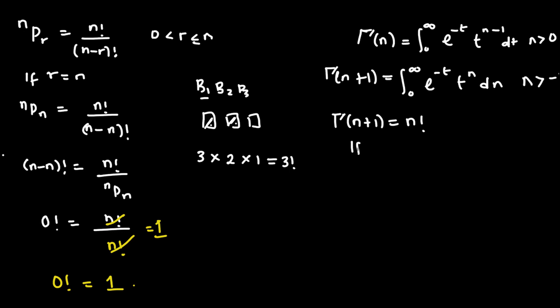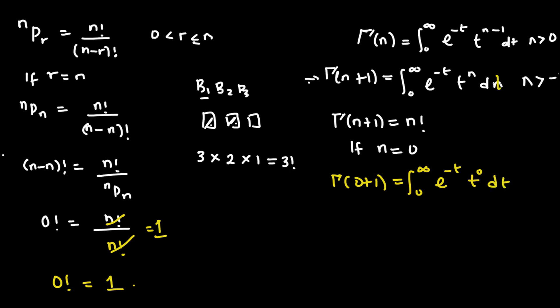So if we set n equal to 0, we are going to have the gamma function of 0 plus 1 equal to the integral of e raised to the power of negative t times t raised to the power of 0 dt, where n is strictly greater than minus 1. Of course, our n equals 0 satisfies that condition.